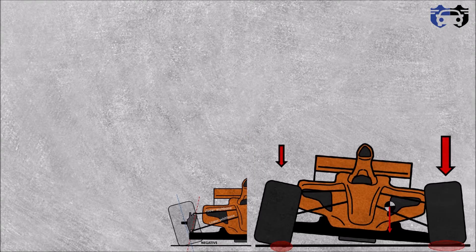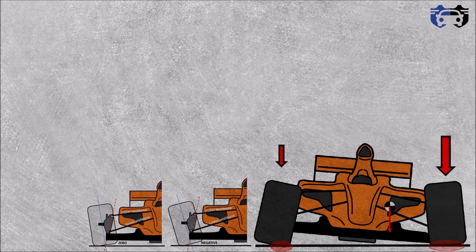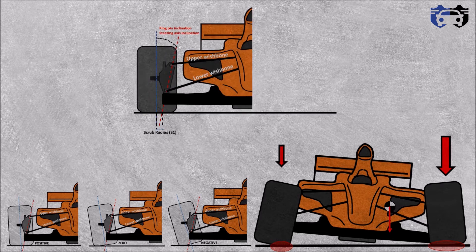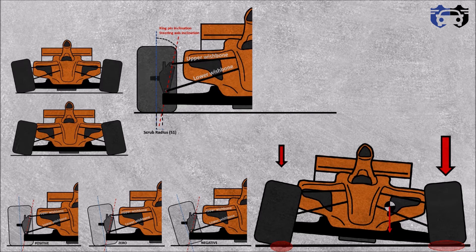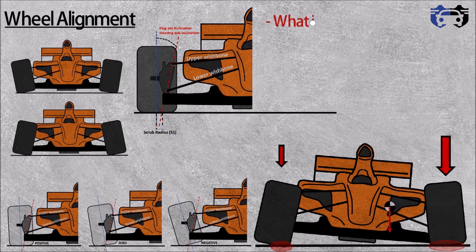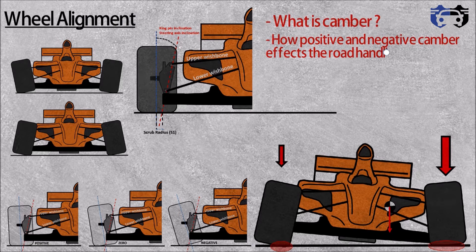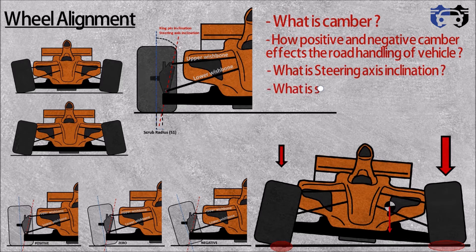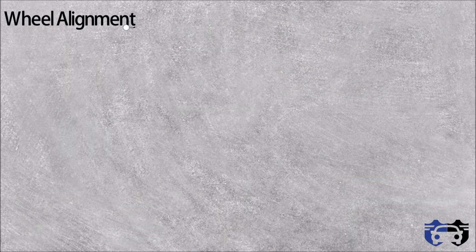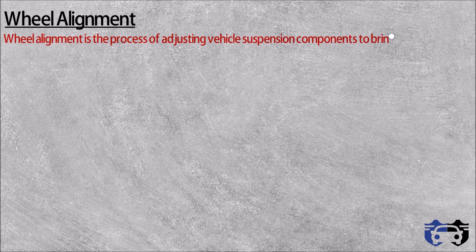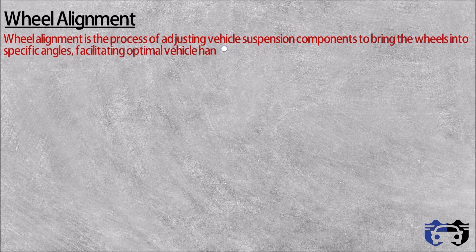Welcome to my channel. This video is an introduction to wheel alignment. In this video you will learn about wheel alignment, what is camber, how positive and negative camber affects the road handling of a vehicle, what is steering axis inclination, and what is scrub radius. Wheel alignment is the process of adjusting the vehicle suspension components to bring the wheel into specific angles, facilitating optimal vehicle handling, tire wear, and performance.